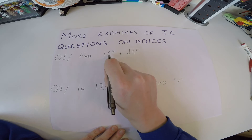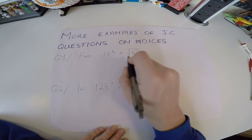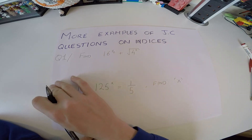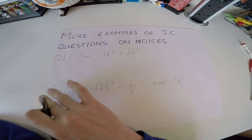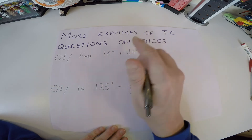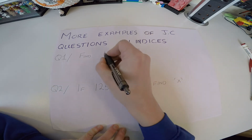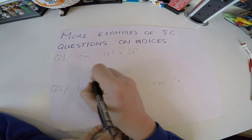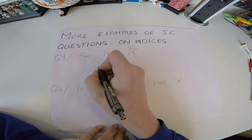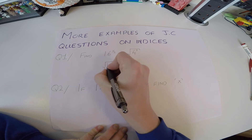The first one: find 16 to the power of a half plus the square root of 4 cubed. We're not going to use a calculator because it's about understanding the process — we're not always going to have numbers we can put directly into a calculator. Now, 16 to the power of a half we should know is the same as the square root of 16.